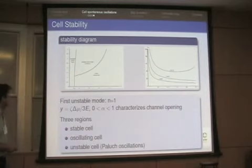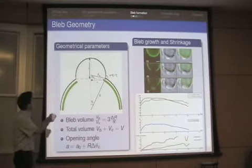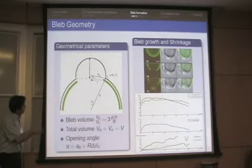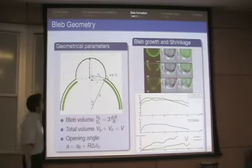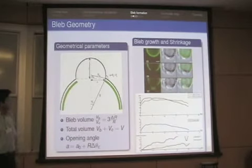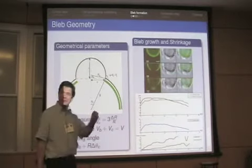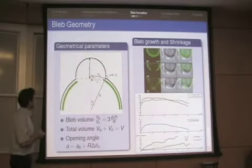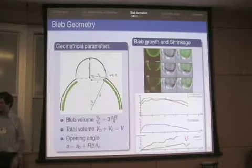Now for my second example: bleb formation. A bleb is a membrane protrusion where the cell has the cortical layer plus membrane, but the bleb has only membrane. We did this work in close collaboration with the group of Eva Paluch. Eva had the nice idea to induce bleb formation by photoablating the cortical layer with a laser — making a hole in the cortical layer — and instantaneously a bleb forms at that location.